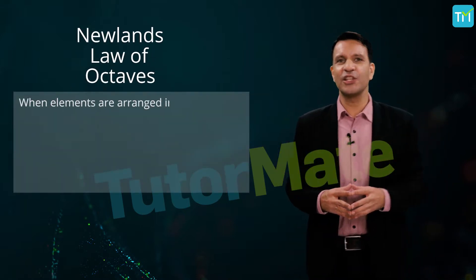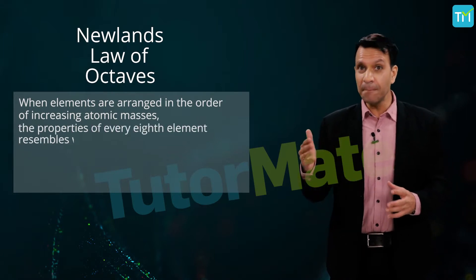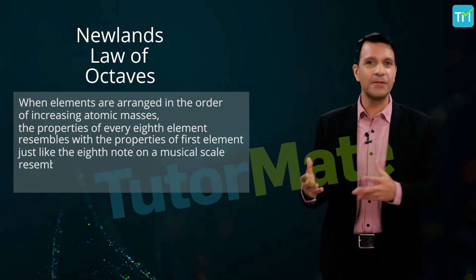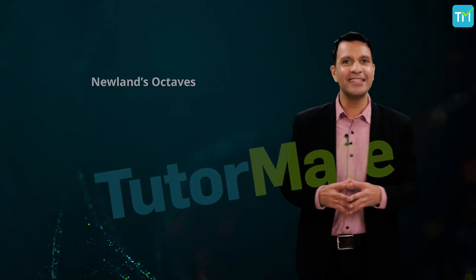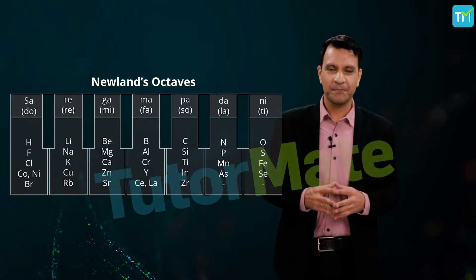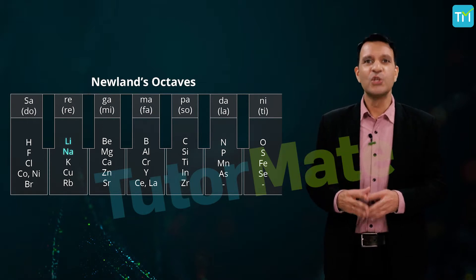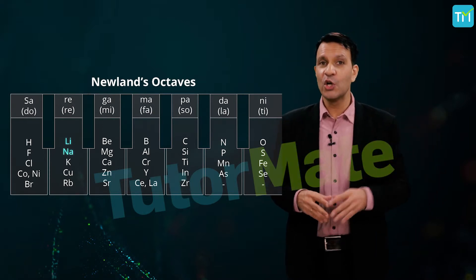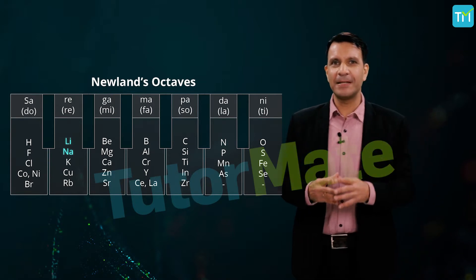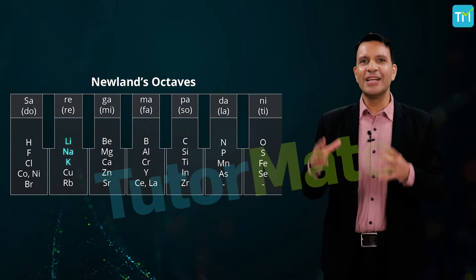Newlands' Law of Octaves states that when elements are arranged in the order of increasing atomic masses, the properties of every eighth element resemble the properties of the first element — just like the eighth note on a musical scale resembles the first note. As you can see in this table, he arranged the elements into horizontal rows of seven. Starting with lithium, the eighth element after lithium is sodium, so sodium and lithium possess similar properties. Similarly, the eighth element after sodium is potassium, and sodium and potassium also showed similar properties.